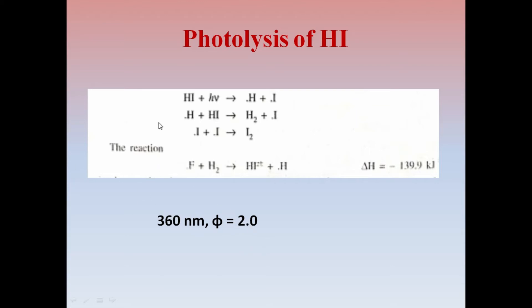HI absorbs the radiation and forms hydrogen free radical and iodide free radical. Further, hydrogen free radical reacts with HI to form H2 with iodine free radical. Iodine free radicals combine to form I2.